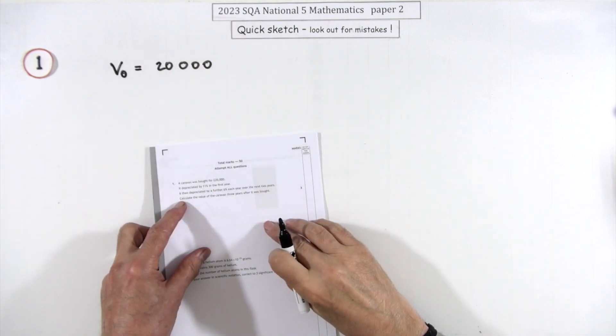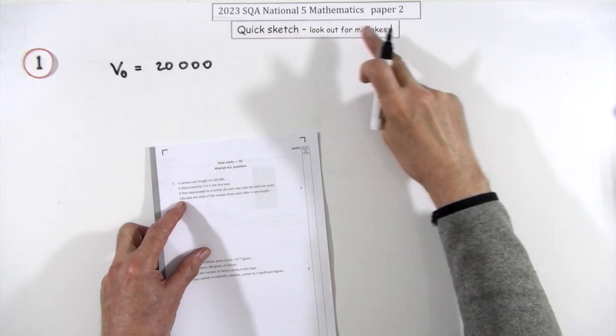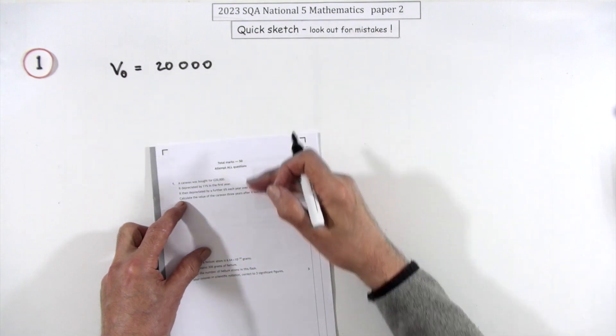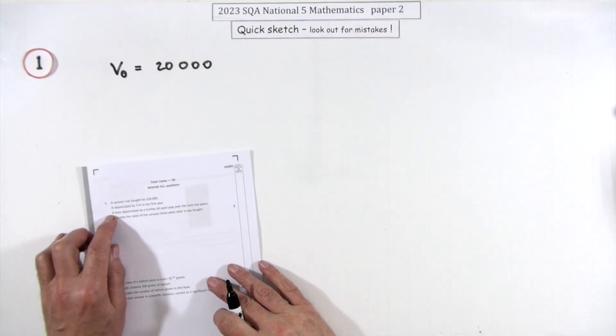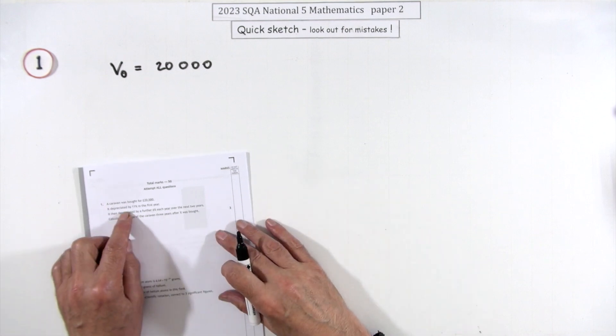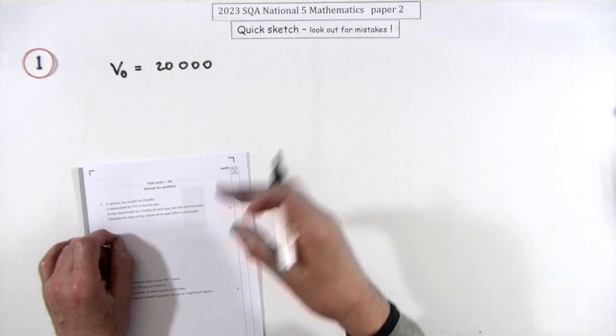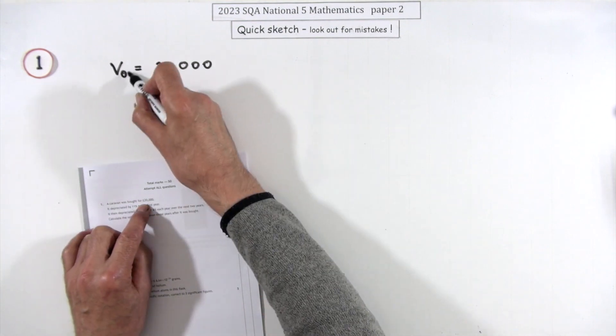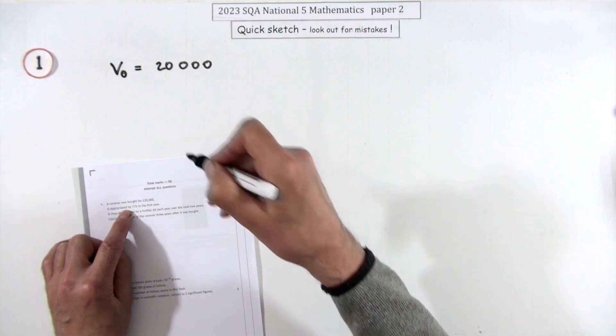Number one, the first question from the 2023 National 5 Maths paper 2. Quick sketch, just going through them fairly quickly here, just the stages as I would go through them. So what's the first bit? There's that compound percentage question. A caravan was bought for 20,000, so I've called that V₀. Now it depreciates, it goes down.